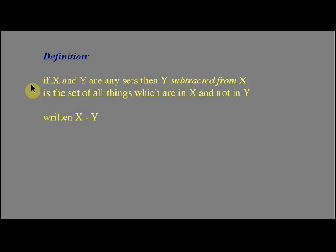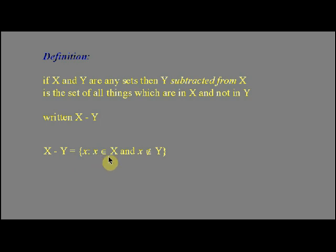Let's define another operation on sets. If X and Y are any sets, then Y subtracted from X is the set of all things which are in X and not in Y. We write that as X minus Y — so it's the set X with all of those things in Y taken out. We might say X subtract Y is the set of all things x such that x is a member of X and x is not a member of Y.